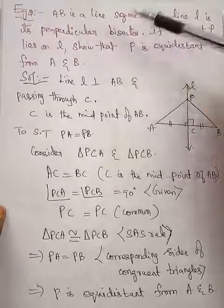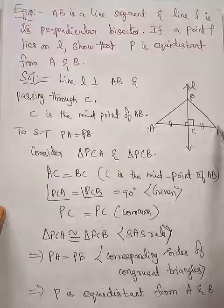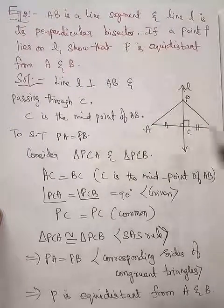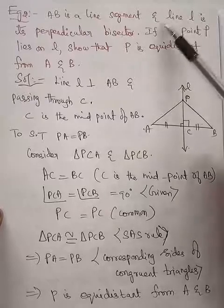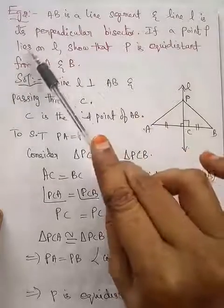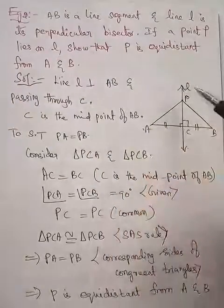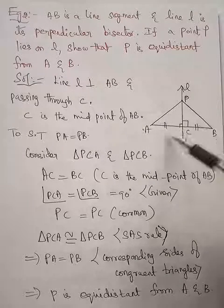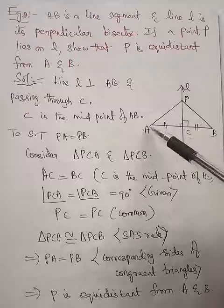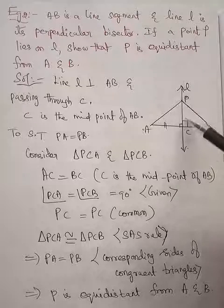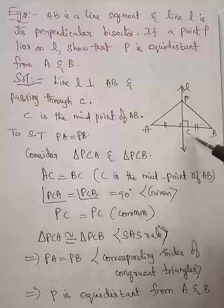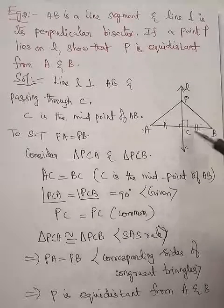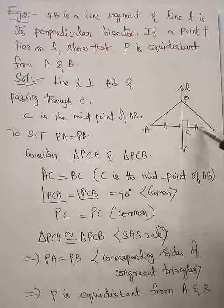AB is a line segment. Line L is its perpendicular bisector. Line L is drawn which is perpendicular to AB and also divides it into two equal parts. That is the meaning of perpendicular bisector. Perpendicular means making angle 90, bisector means dividing into two equal parts. So AC length is equal to BC length.